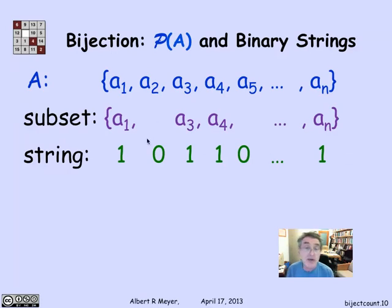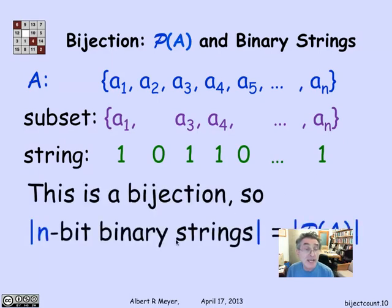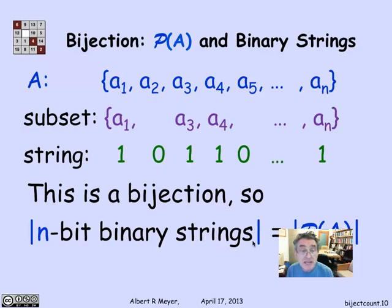This is easily seen to be a bijection. Given the string, you can figure out what the subset is. Given the subset, you can figure out what the unique string is. So we have a bijection, and what we conclude is that the number of n-bit strings is equal to the size of power set of A, equal to the number of subsets of A.